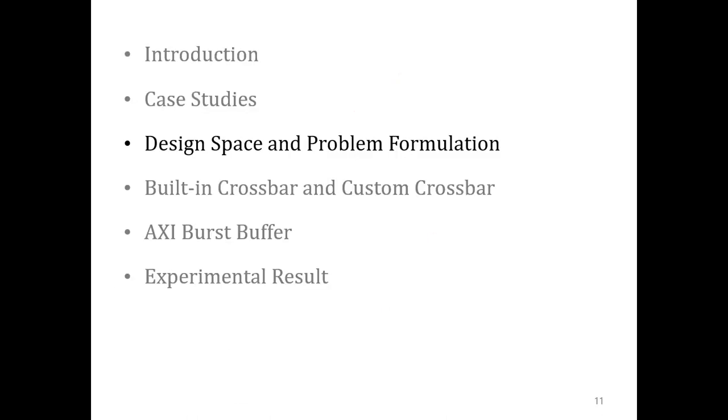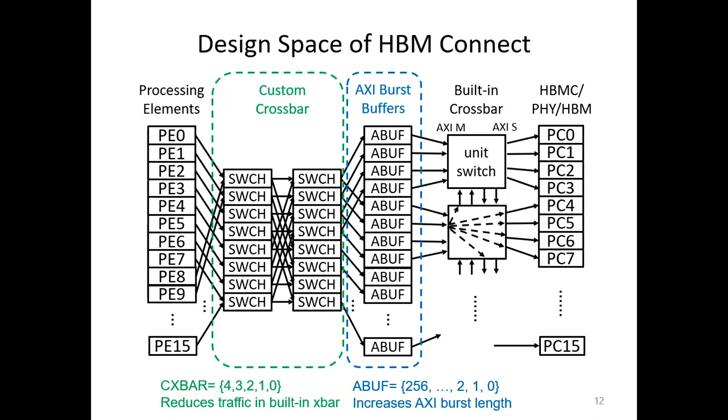Now, let's look at the design space of HBM Connect and the problem we are going to solve. HBM Connect has two key components between the PEs and the built-in crossbar. The first one is the custom crossbar or CX bar. The purpose is to reduce the traffic in the built-in crossbar. We can explore the number of stages being deployed. The second component is the AXI burst buffer or A-buff. Its role is to increase the bus burst length. We can change the size of the buffer.